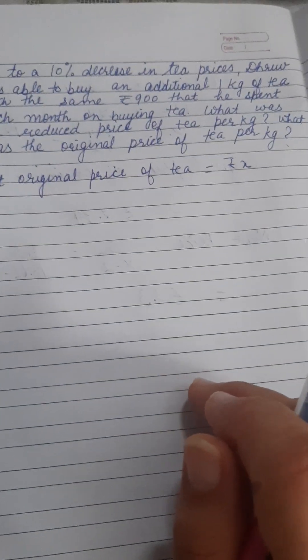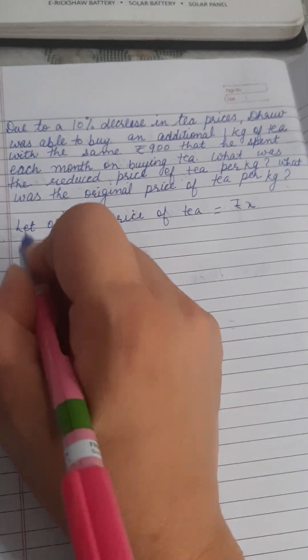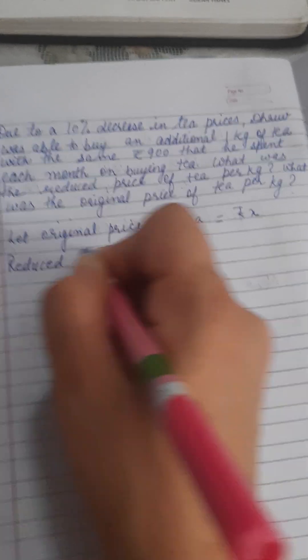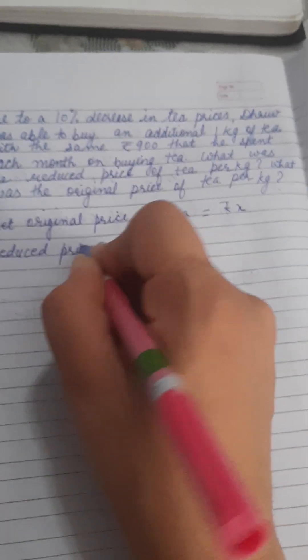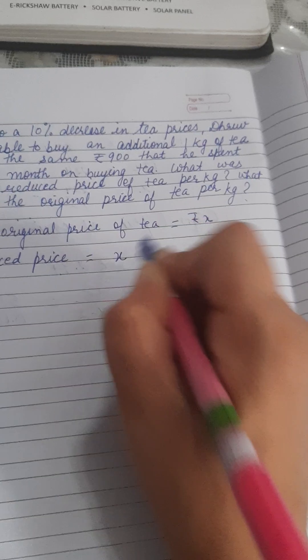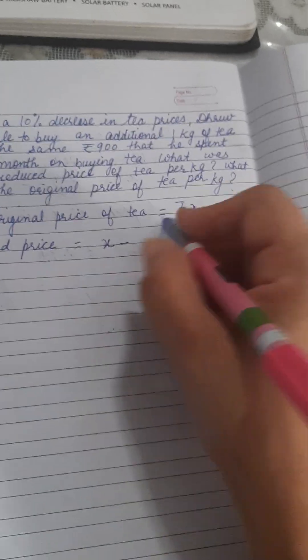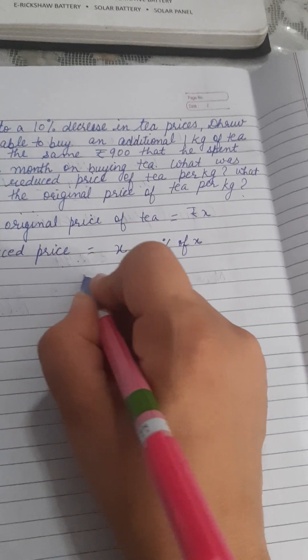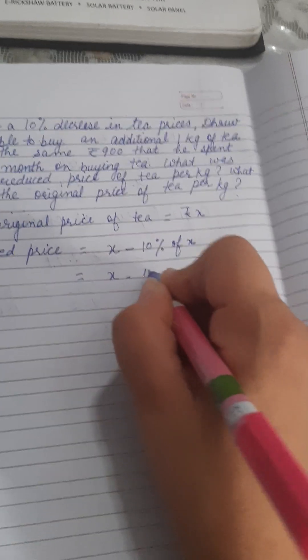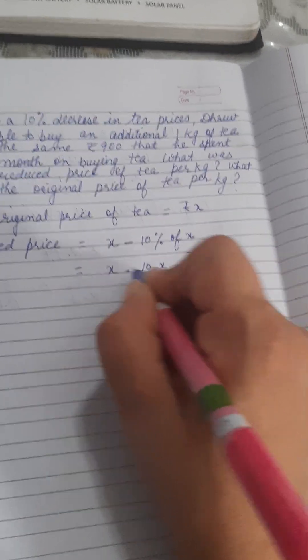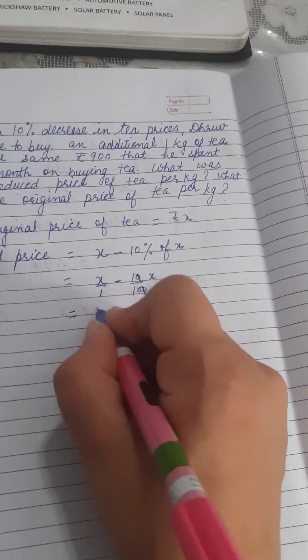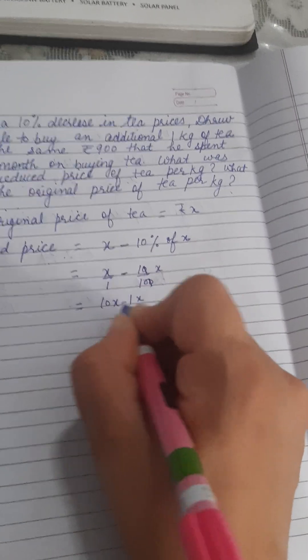So decreased price or new reduced price is: firstly the price was X, and 10% of X is decreased. It means X minus 10 by 100 X. And solve it: it is 10X minus 1X by 10.